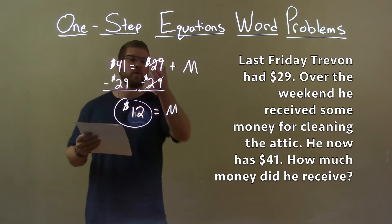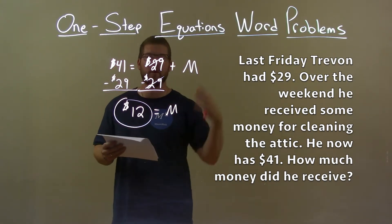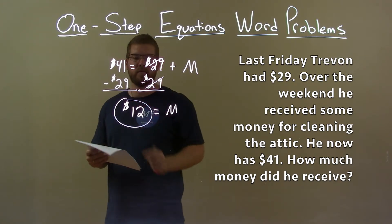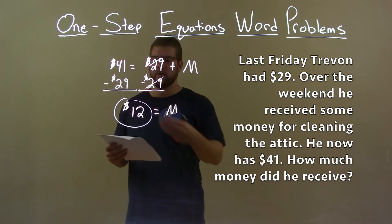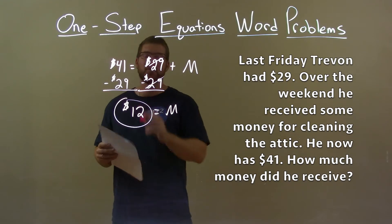With that information, we created an equation and solved for the missing variable M. We subtracted 29 from both sides, giving M by itself, equal to how much money he made over the weekend for cleaning the attic: $12.